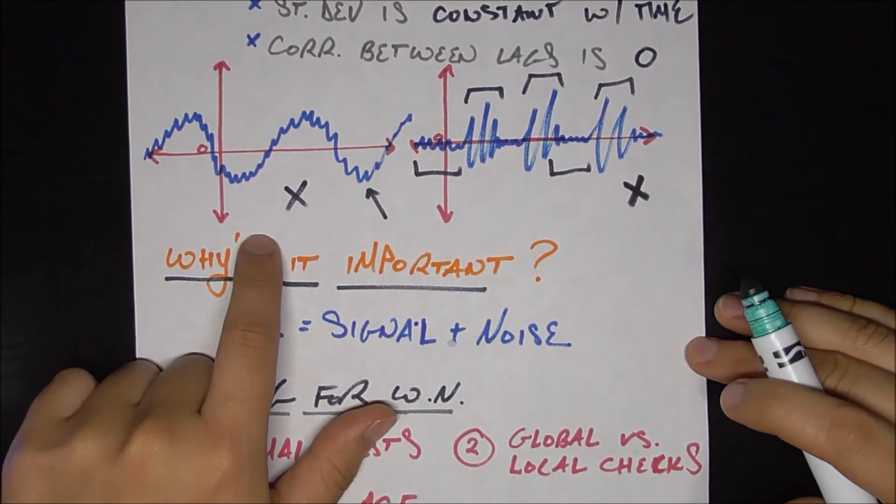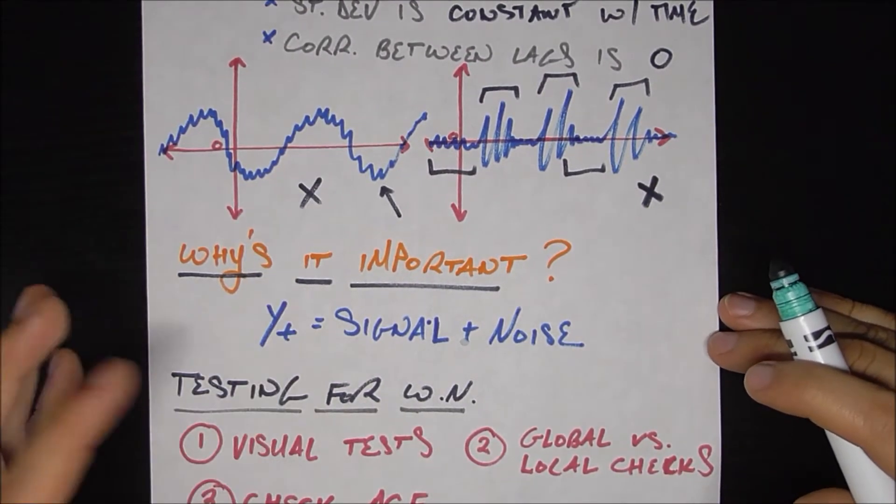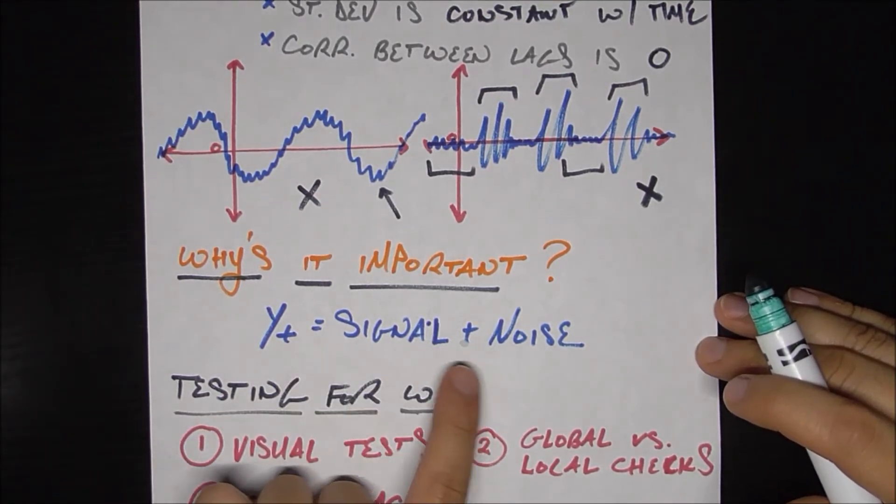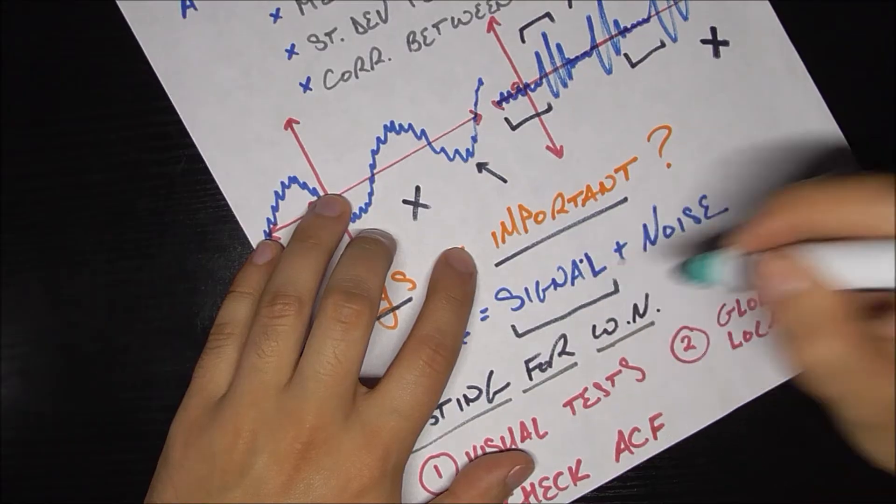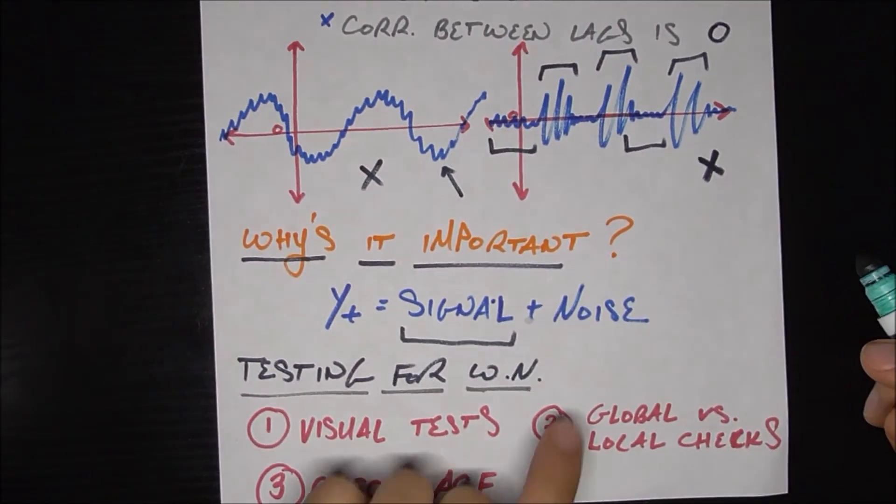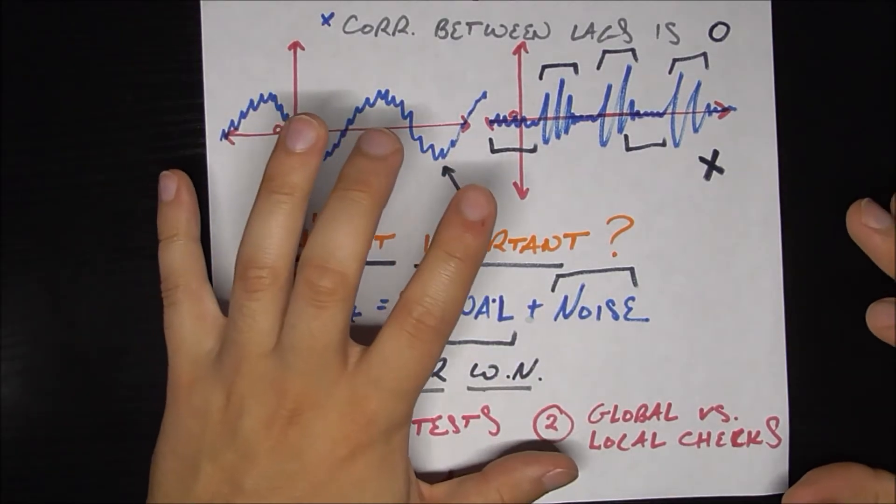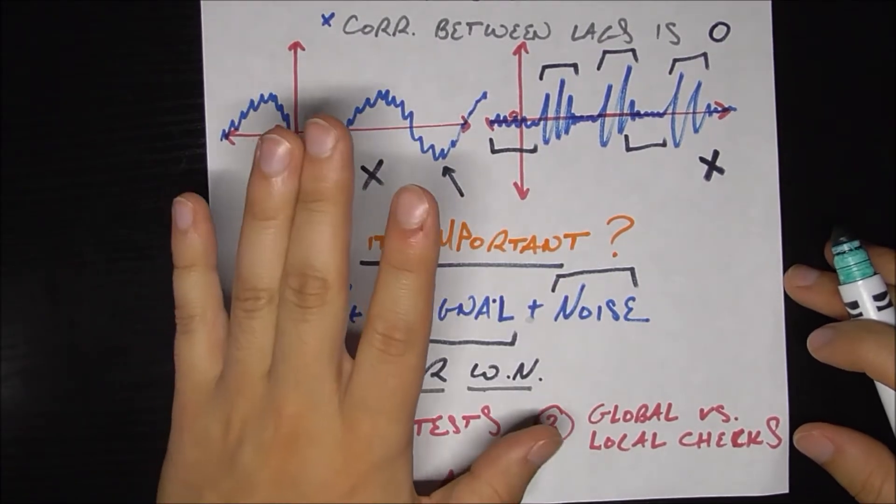So why is it important? Whenever we do a time series analysis on some time series y sub t, we always assume it's the combination of a signal, which is stuff we can predict and stuff we can make a model for, and noise, which is white noise, aka something that's totally unpredictable. We could not have predicted it in any way whatsoever.